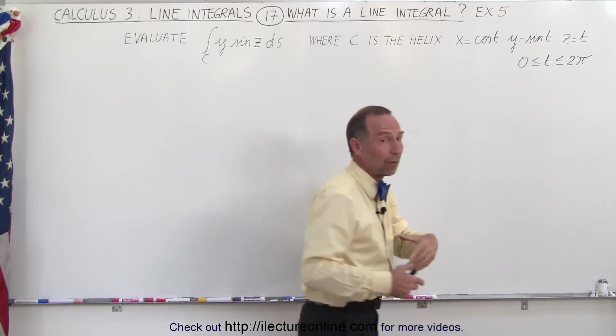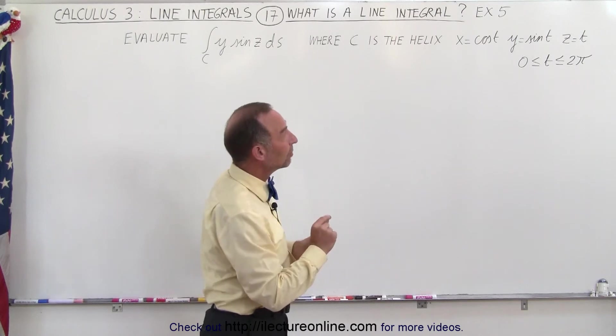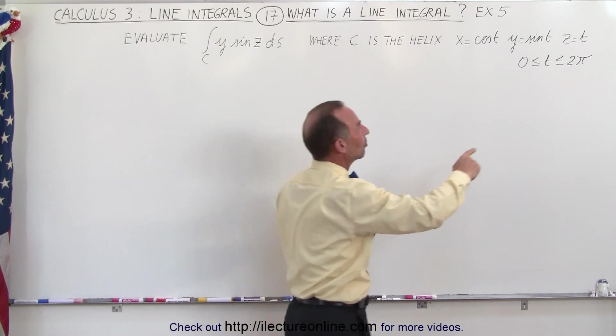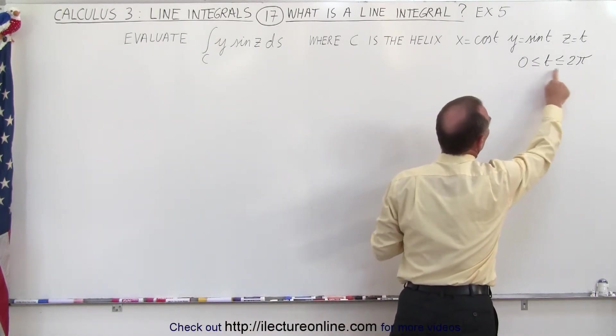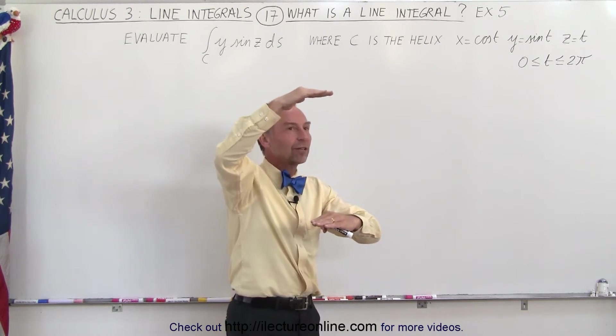And z equals t. So we already have been given the parametric equations, but what that really is, as t increases, z of course increases in height. Notice that the limit from t goes from 0 to 2π. So when we go to 2π, z will have a value of 2π.